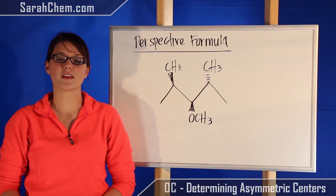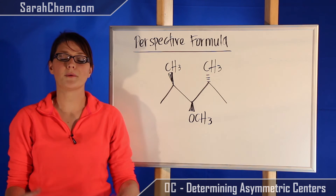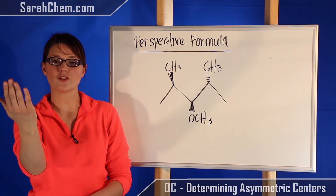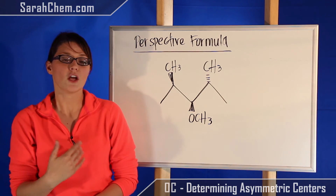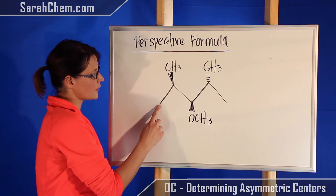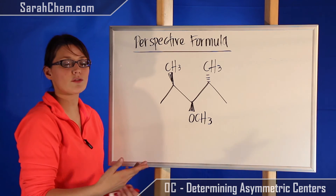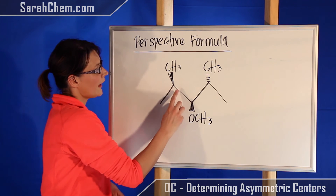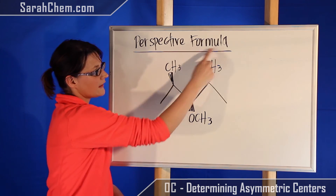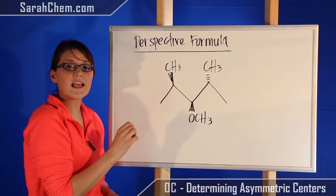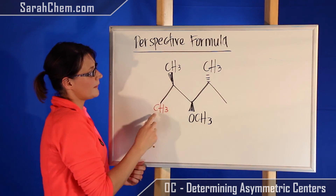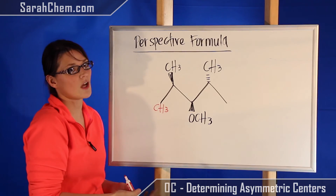Now let's figure out the asymmetric centers in a perspective formula. In a perspective formula you're shown whether substituents are coming out of the plane of the board on a wedge or into the plane on a hatched wedge. The rules are the same: sp3 hybridized with four different groups attached. This carbon here has three implied hydrogens — definitely not asymmetric. This one has a methyl, an implied H, this whole group, and this — but don't forget that is also a CH3. So this carbon has two of exactly the same group attached and it's not an asymmetric center.